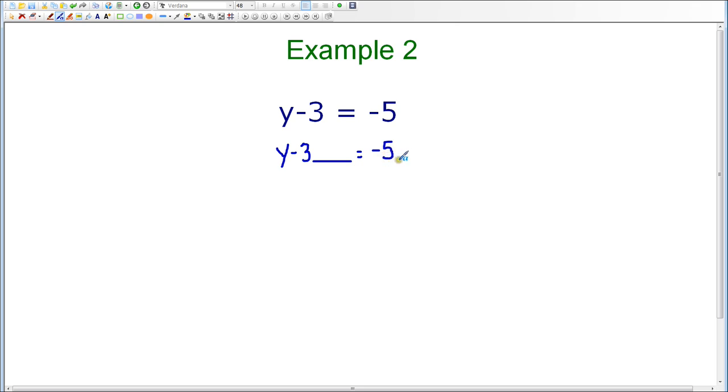On the right-hand side, we have equals negative 5, and I'm going to leave another blank because whatever I do to one side of the equation, I have to make sure I do to the other side of the equation in order to keep the equation balanced.